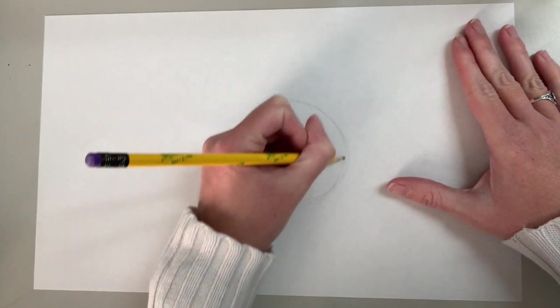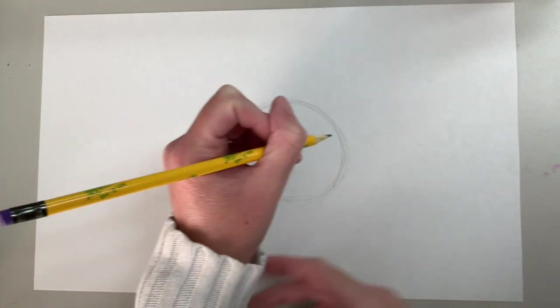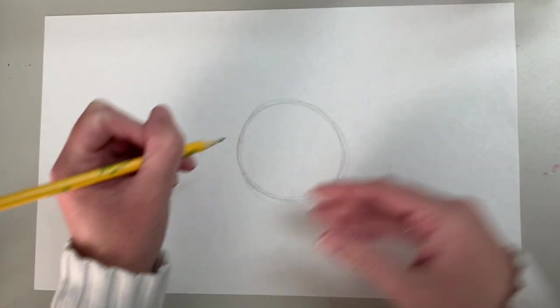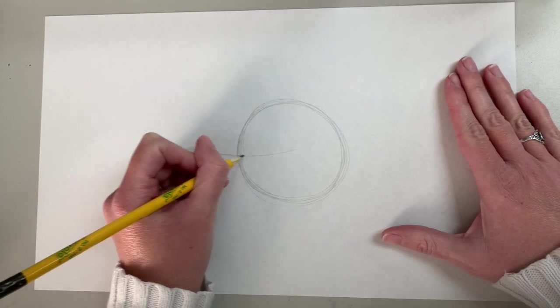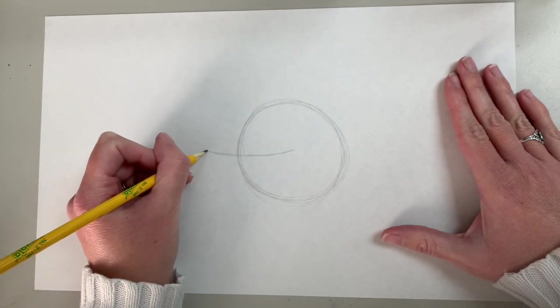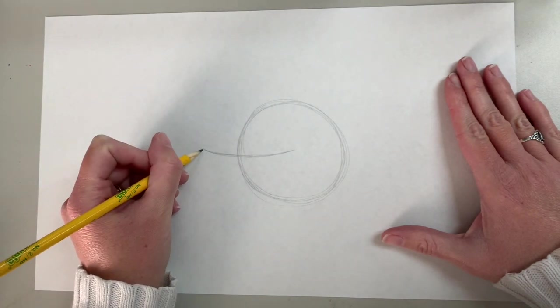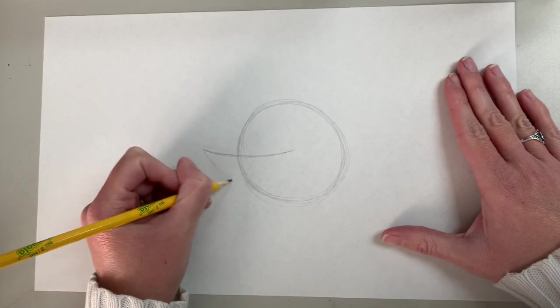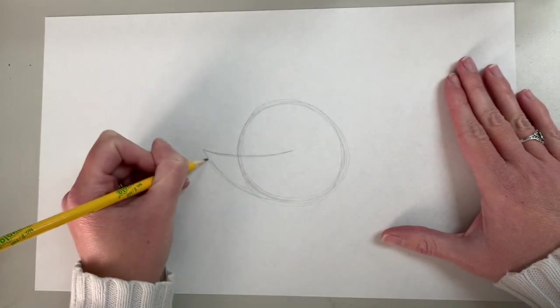It's easier to draw a circle if you keep your wrists straight and just move your entire arm. Then we're going to have a curved line coming out from the middle of the circle off to the left and then we're going to connect it from here down to here at the bottom of our circle.